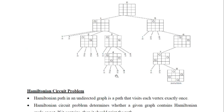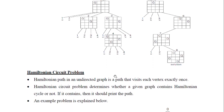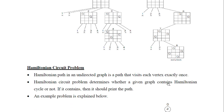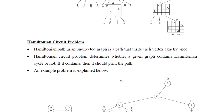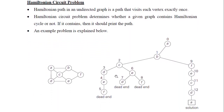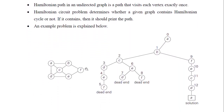The next example is the Hamiltonian circuit problem. This problem determines whether a given graph contains a Hamiltonian cycle — that is, a path that visits each vertex exactly once. I will explain with an example using an undirected graph. I have to start from one vertex, visit all vertices exactly once, and return to the same starting vertex A again.